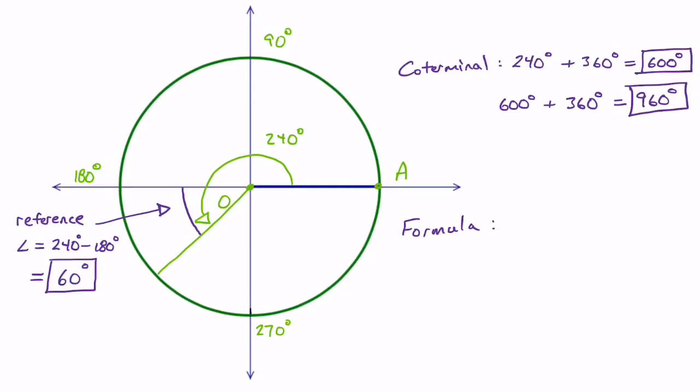So a formula: just take your angle in standard position, and it's always just plus or minus 360 degrees times n, where n is a whole number. What most people forget is to write in that n is a whole number, but it is important.